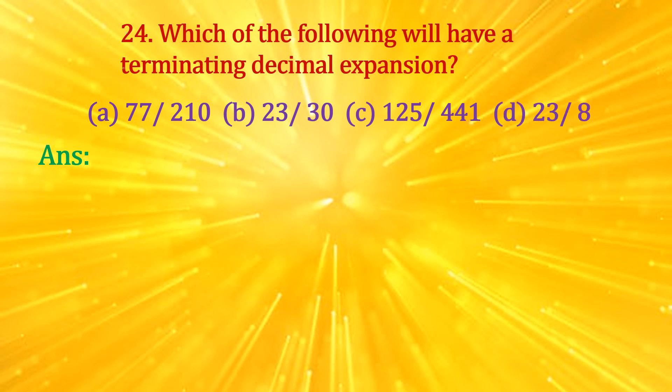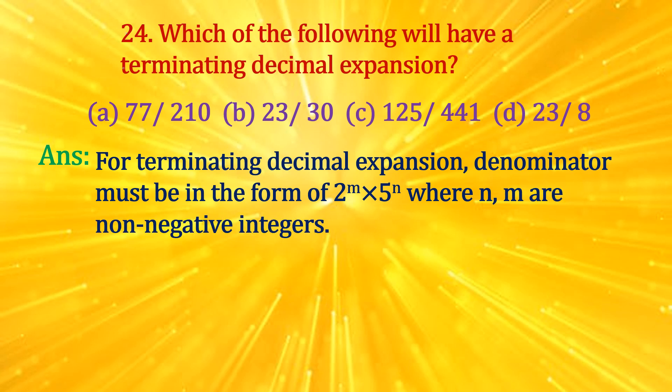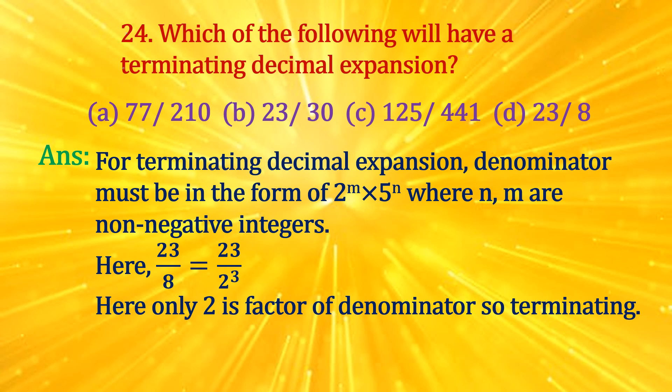Answer: For terminating decimal expansion, the denominator must be in the form 2^m × 5^n, where m and n are non-negative integers. Here, 23/8 = 23/2³. Only 2 is a factor of the denominator, so it terminates. Thus, d is the correct option.